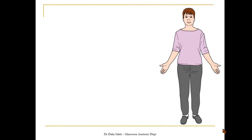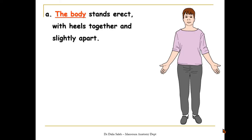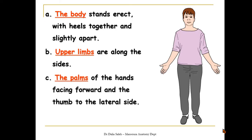The anatomical position is an imaginary position that anatomists agree on, so that when we describe the human body we imagine it standing in this position. In this position the body stands erect with heels together and slightly apart, the upper limbs lie along the sides of the body, the palms of the hands are facing forward with the thumb on the lateral side, and the head and eyes are facing forward.